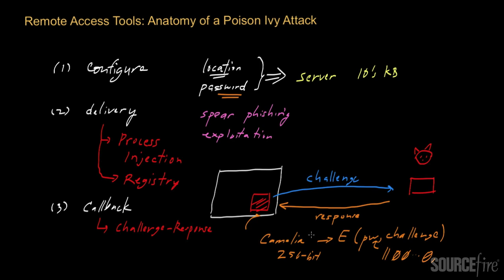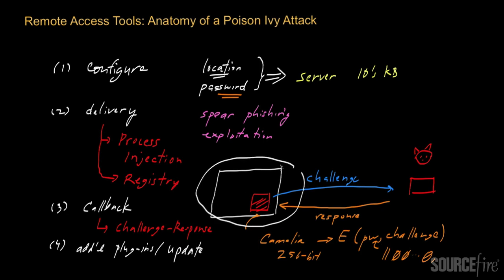At this point, the attacker's client might start to do things like install additional poison ivy plugins or update various poison ivy components. Once the challenge-response protocol has been completed and they know they're talking to the right parties, they can go ahead and start doing whatever it is they want. But perhaps more importantly, it's at this stage that the attacker now has real carte blanche access to the victim's system, able to do anything he wishes using the graphical user interface of poison ivy to essentially control that system interactively.